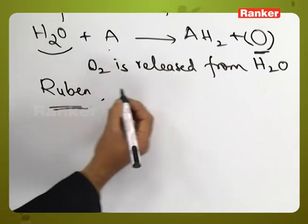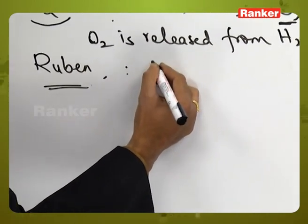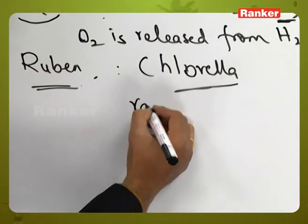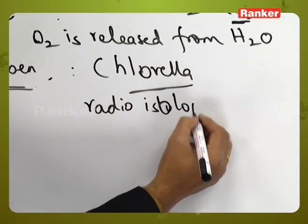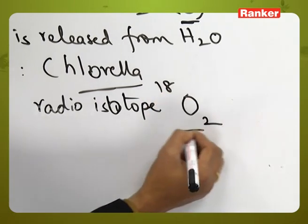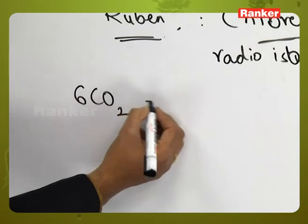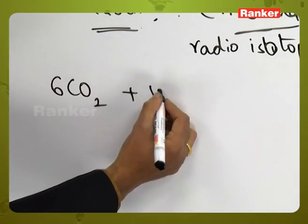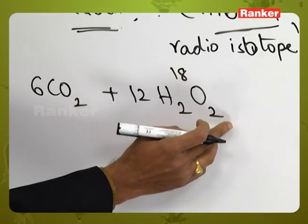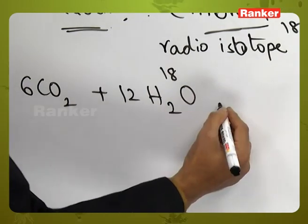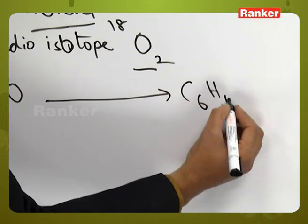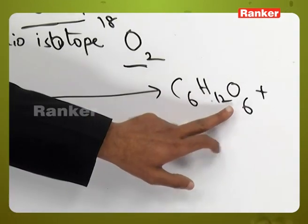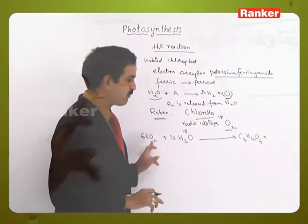Ruben and other scientists used the experimental material Chlorella, in which they used the radioisotope of oxygen, O18. This can be shown in the form of an equation. Carbon dioxide also contains oxygen, but it is not a radioisotope. Whereas the radioisotope was taken only in the form of the water molecule — H₂O¹⁸ — giving rise to C₆H₁₂O₆. The oxygen in the glucose molecule is not a radioisotope, showing that the oxygen in glucose comes from carbon dioxide, not from the water molecule.